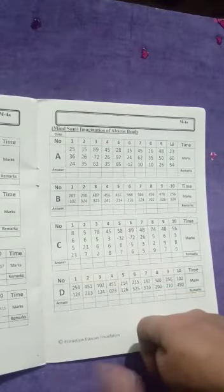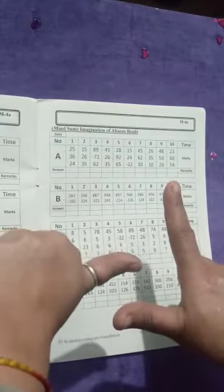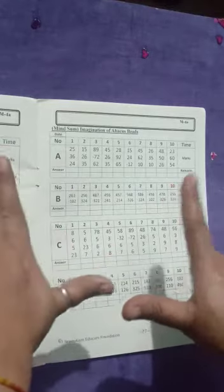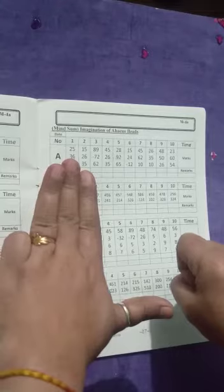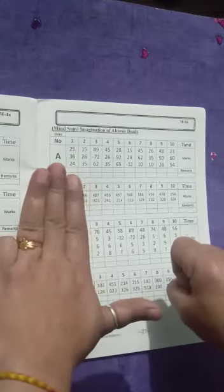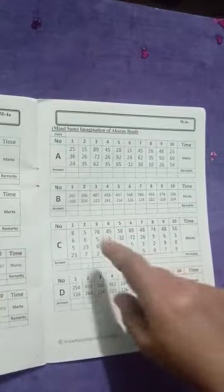Second question, 256, add 3, 2 plus 3 is 524. Answer will be 580.